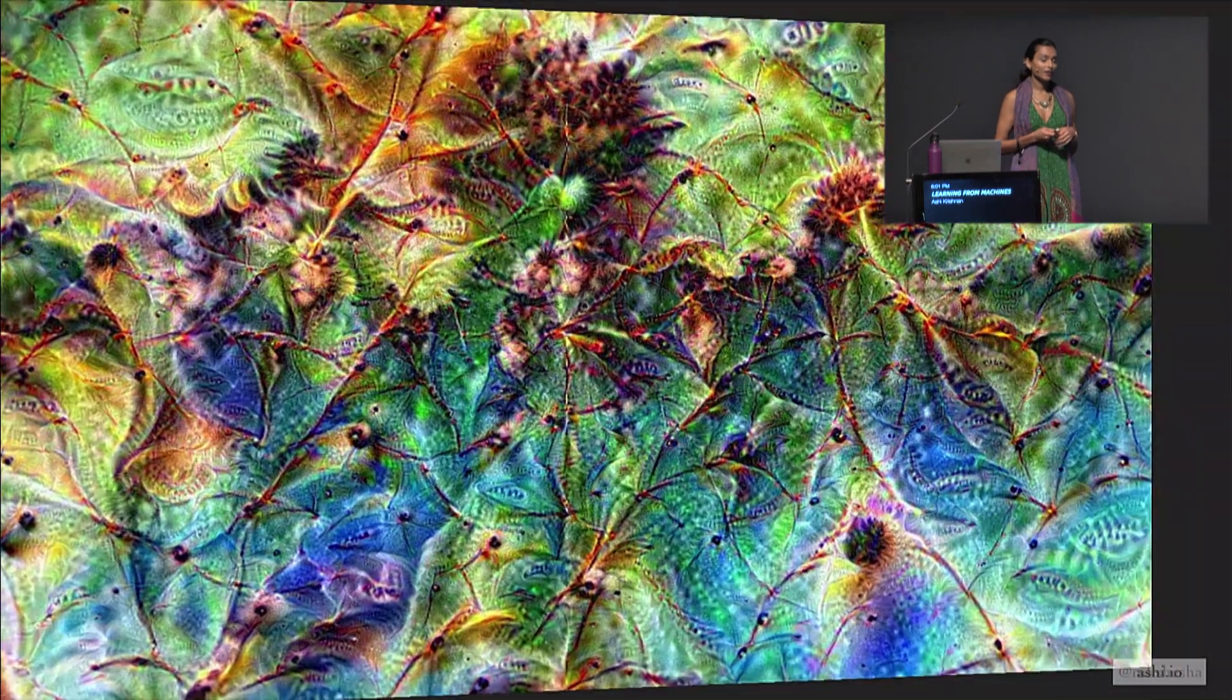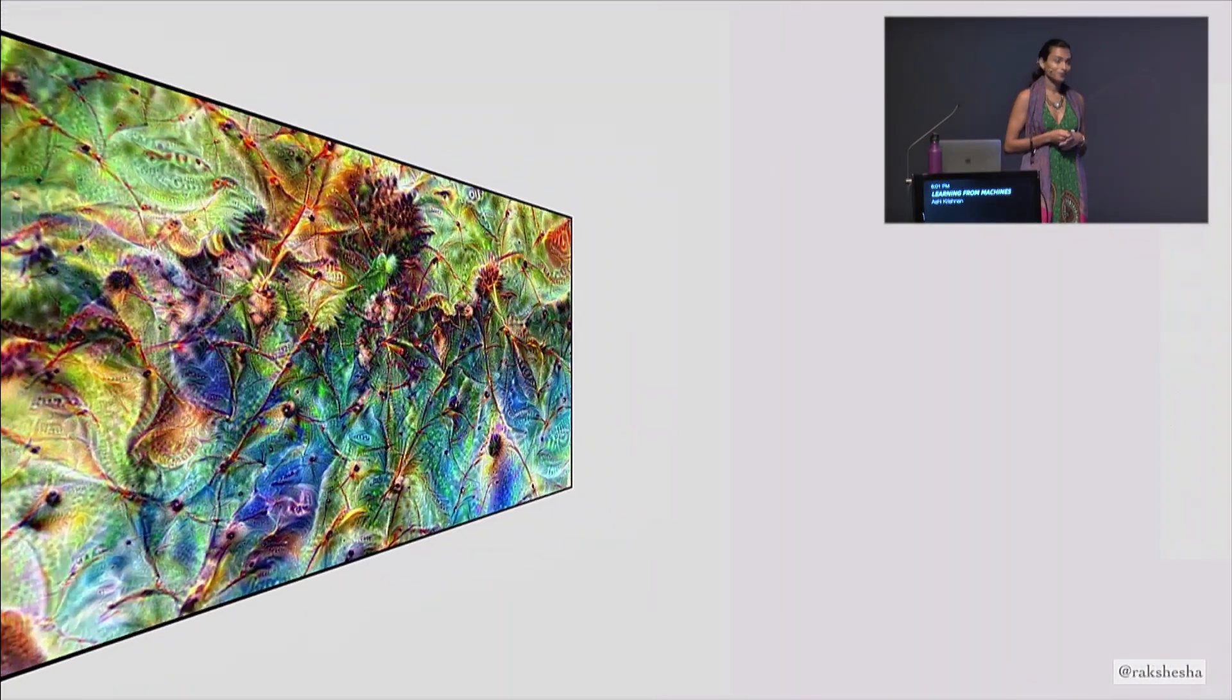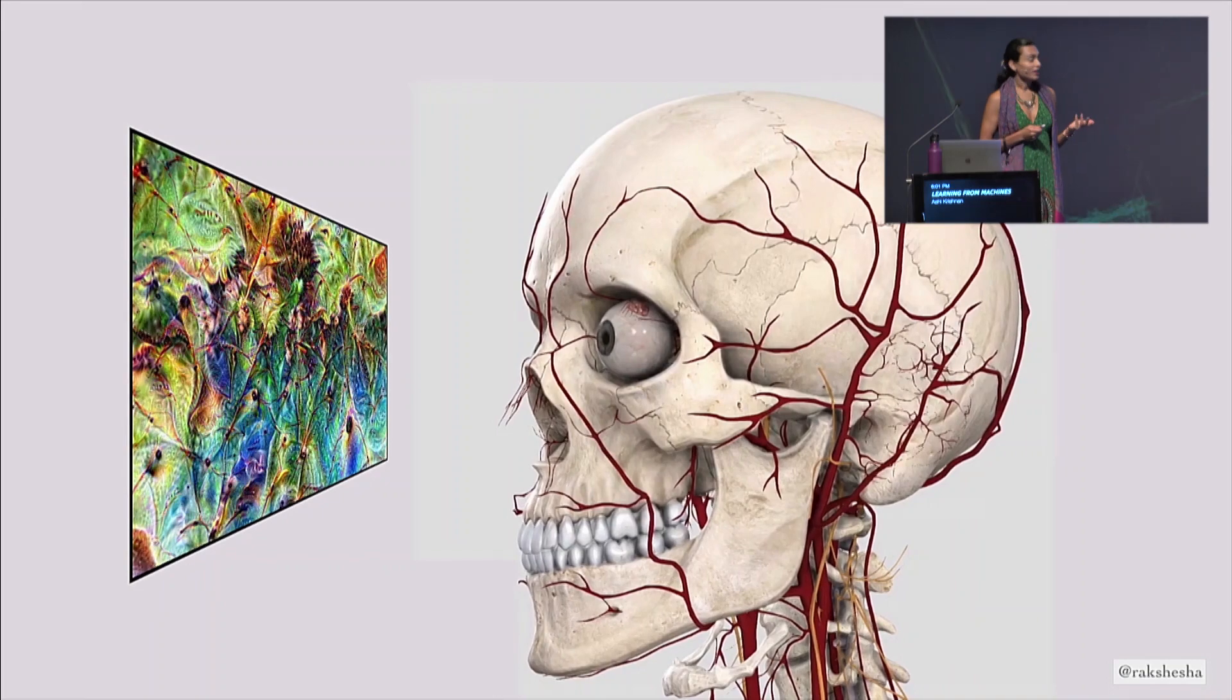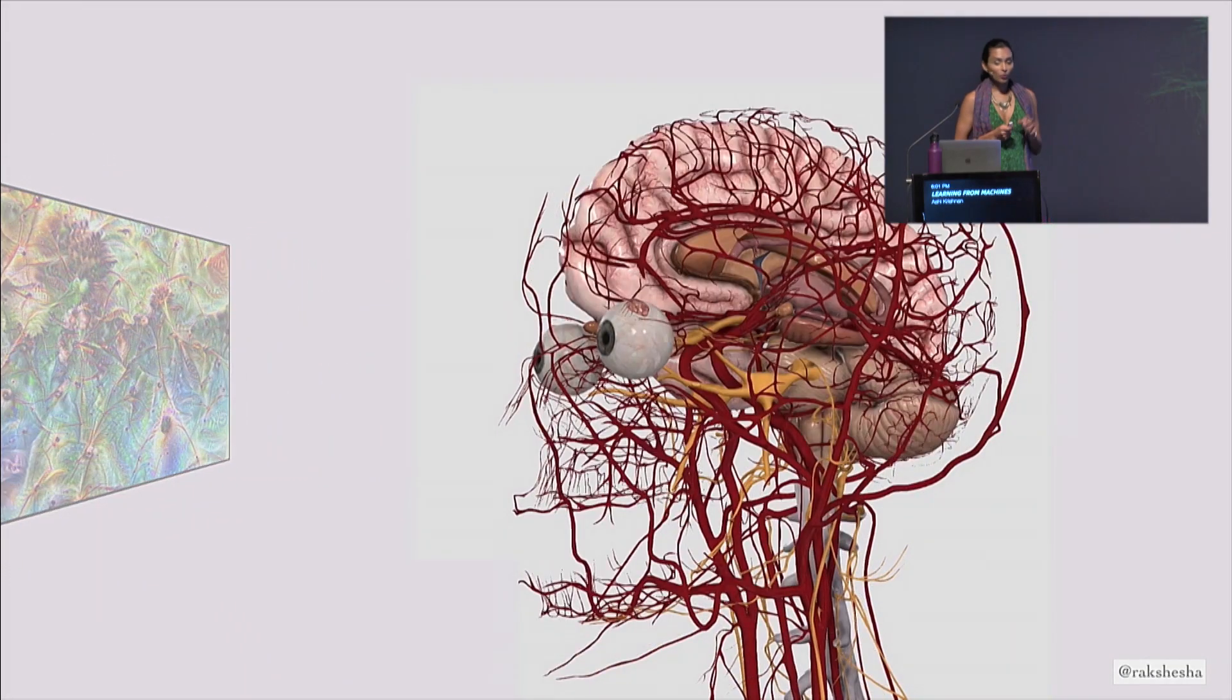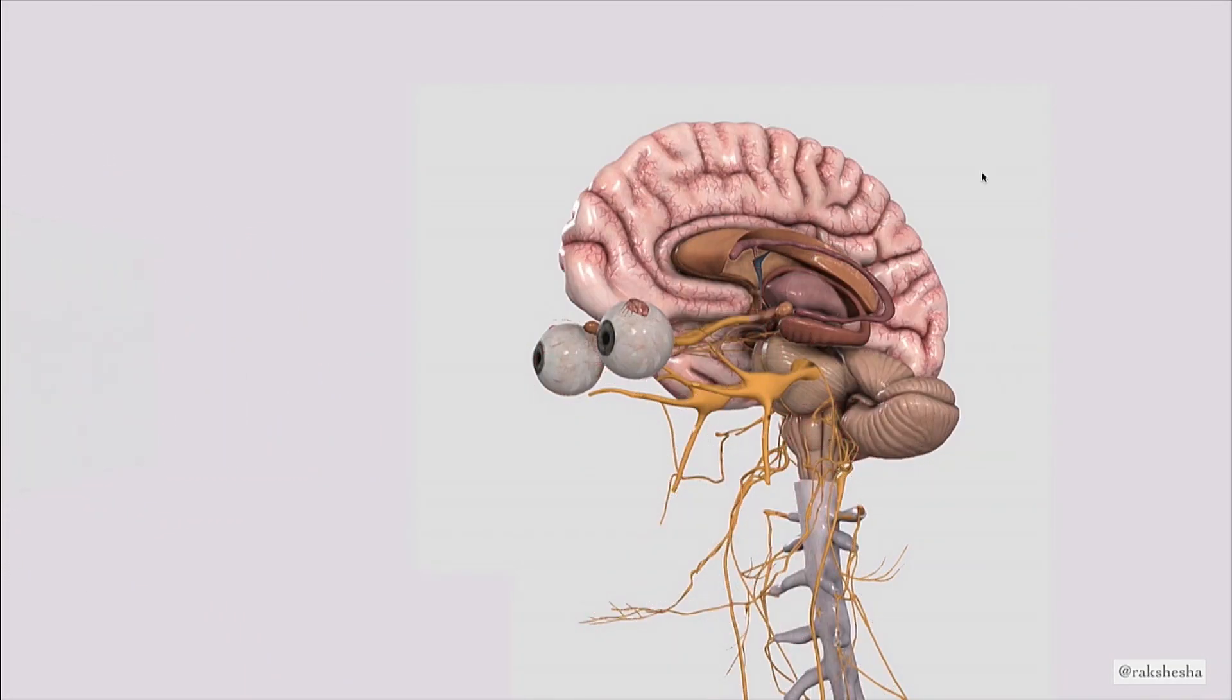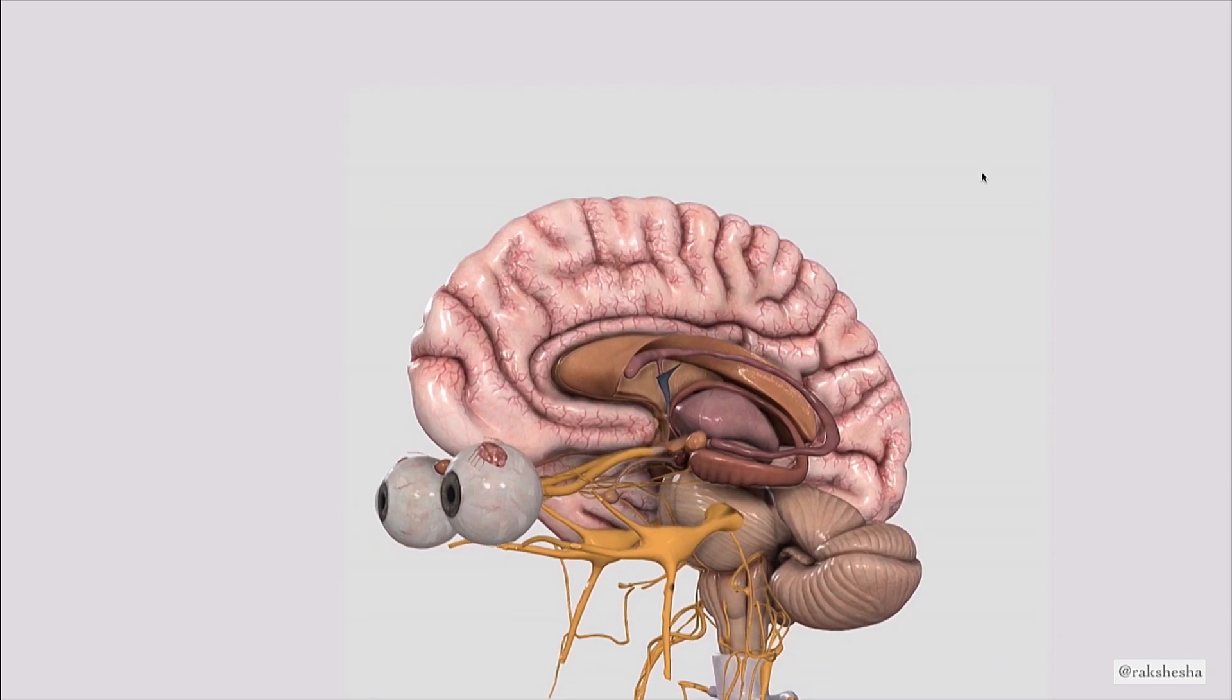To figure that out, let's take a look inside ourselves. Meet Scully. Scully doesn't need all this cruft. We're just looking at Scully's visual system, which starts here, in the retina.